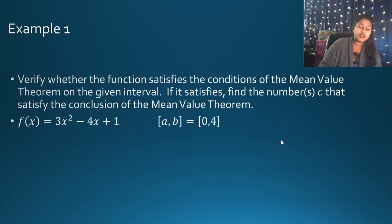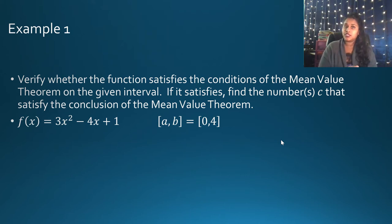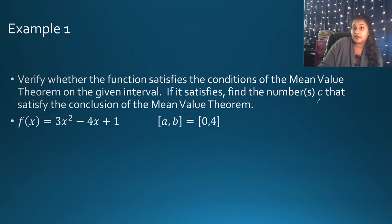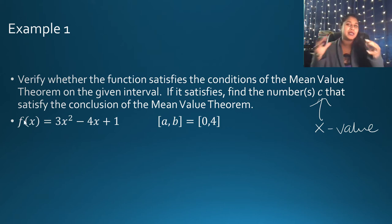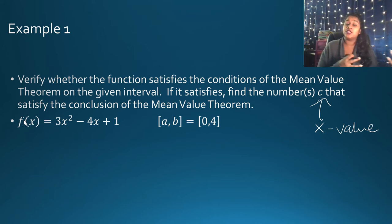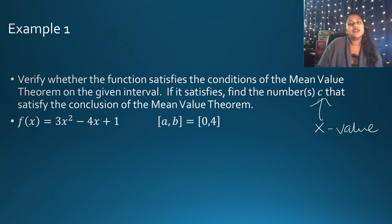Here's the first example. We have F(X) = 3X² - 4X + 1, and we are asked: does it meet the conditions of the MVT, and if so, solve for C? Make sure you recognize what you're solving for — F(X) is a Y value, while C is an X value. There's often confusion between the independent variable X and the dependent variable Y, so make sure you differentiate between them.